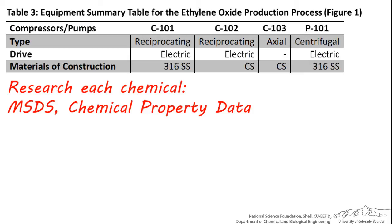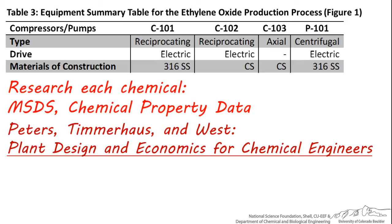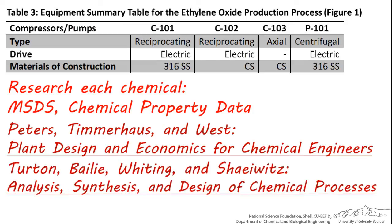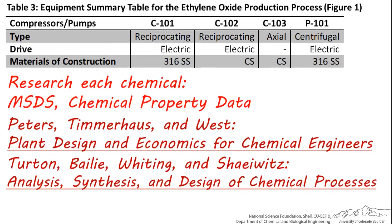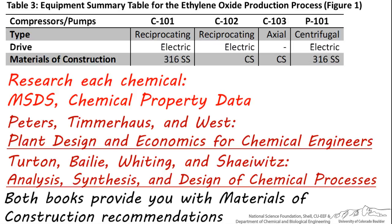It's a good idea to look up material safety data sheets and chemical property data for each chemical in your process — not only to help you select the best material for each piece of equipment, but also because it's important to be cognizant of any potential safety hazards. I strongly suggest looking in Peters, Timmerhaus, and West, or in Turton, Bailey, Whiting, and Shaywitz's design books, as both have pages of chemical compatibility charts. These charts give you MOC recommendations based on the chemicals in your process. Be sure to look in the Material and Fabrication Selection chapter of Peters, Timmerhaus, and West, or the Estimation of Capital Costs chapter in the Turton, Bailey, Whiting, and Shaywitz book to find these charts. This is one of the best and easiest ways of narrowing down and supporting your materials of construction choice.